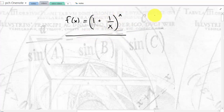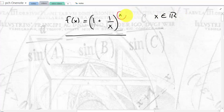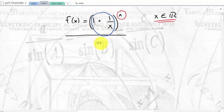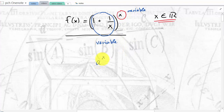In order to study E, we need to take a look at this function f, defined as (1 + 1/x) to the power of x, where x is a real number. Look at the base: 1 + 1/x is a variable, and the exponent is also a variable. So it's not really just an exponential function, because in an exponential function the base is not a variable — just the exponent. Here, both of them are variable.